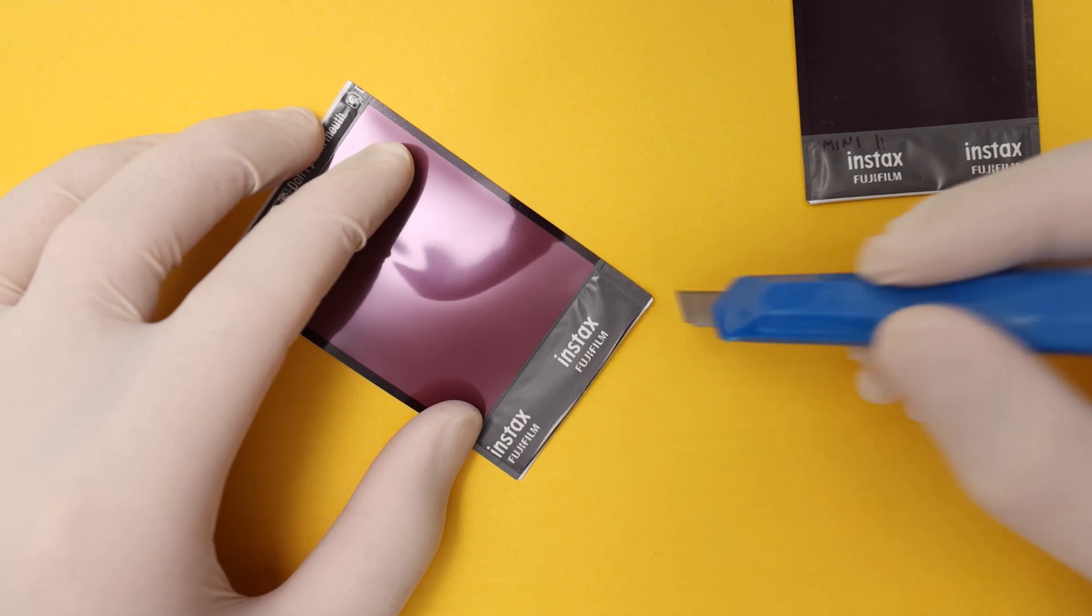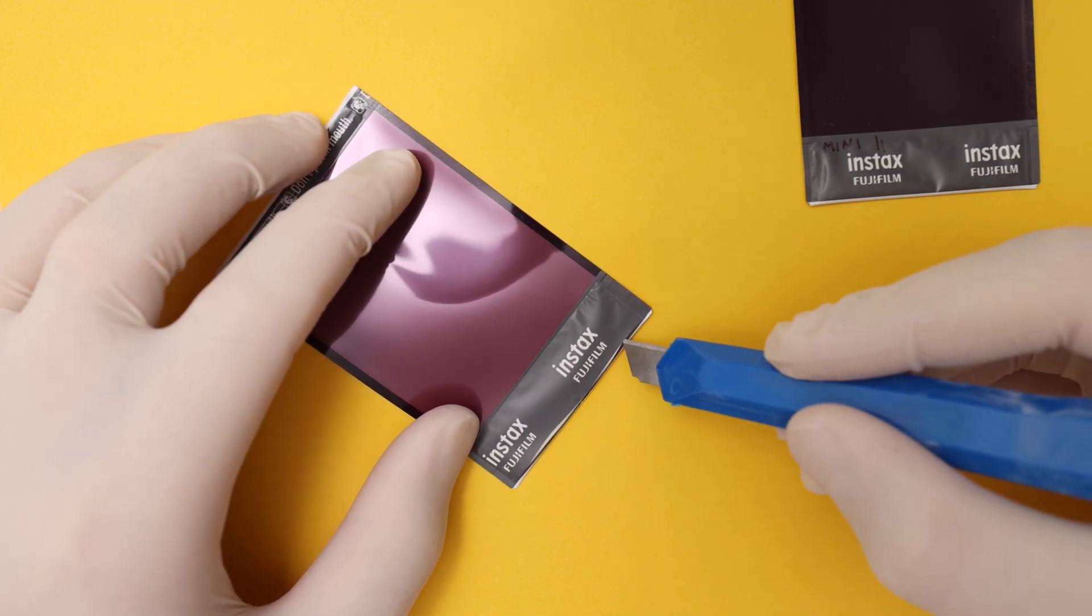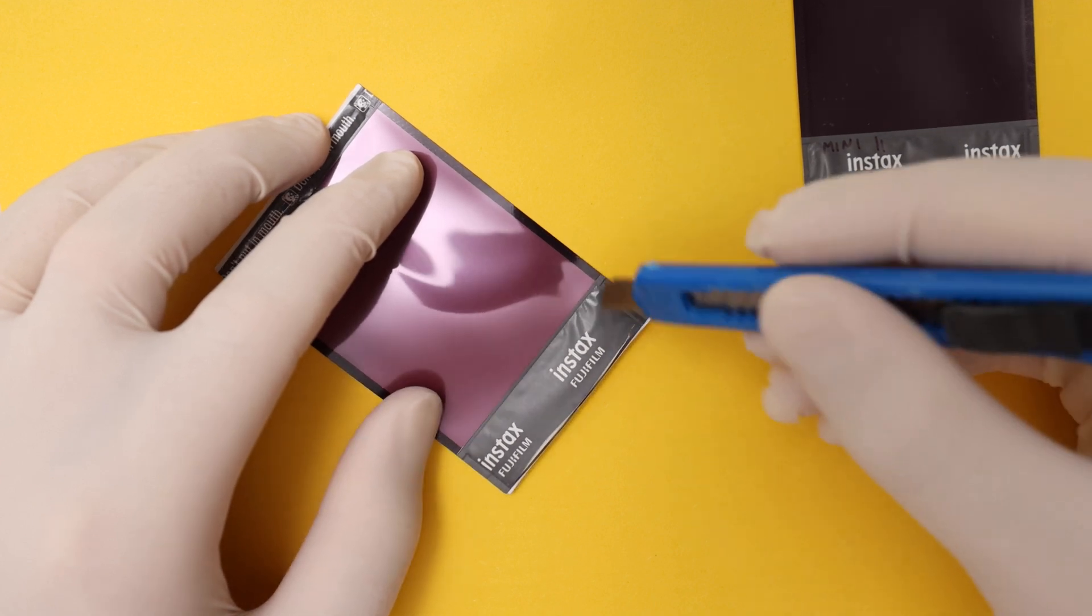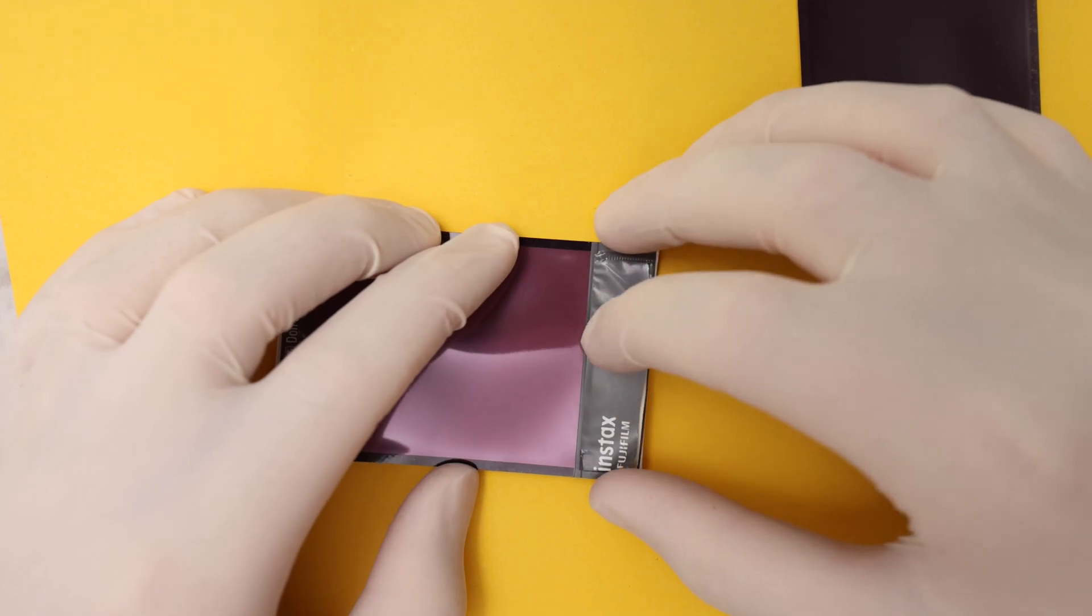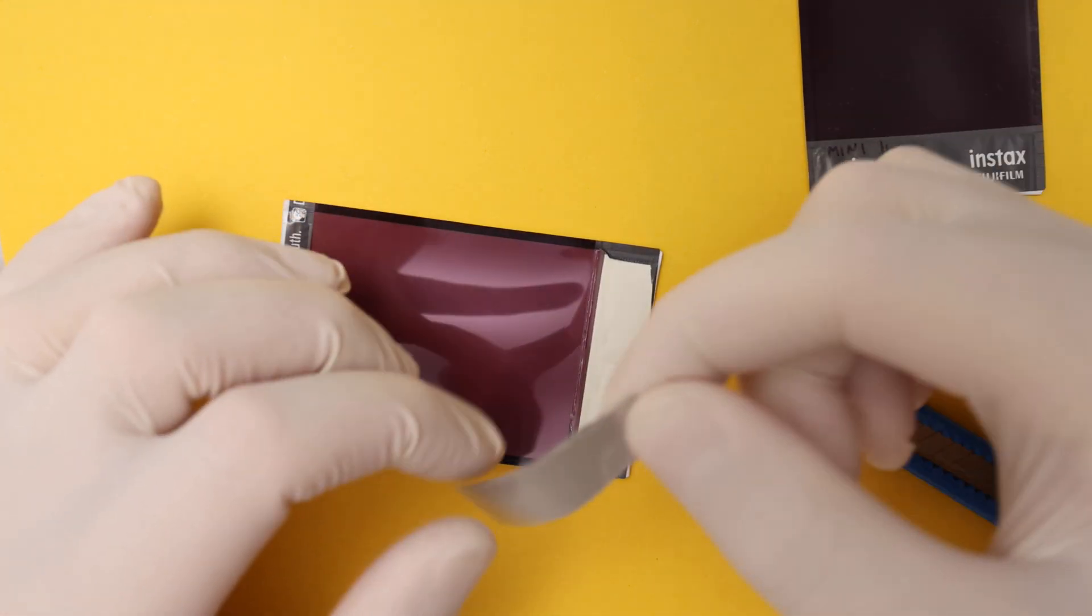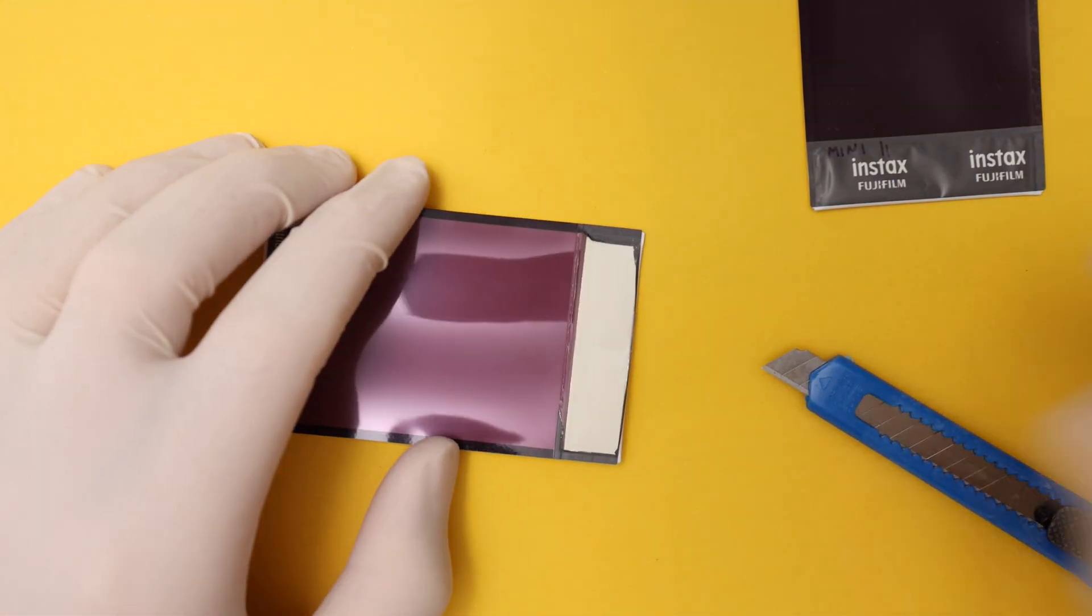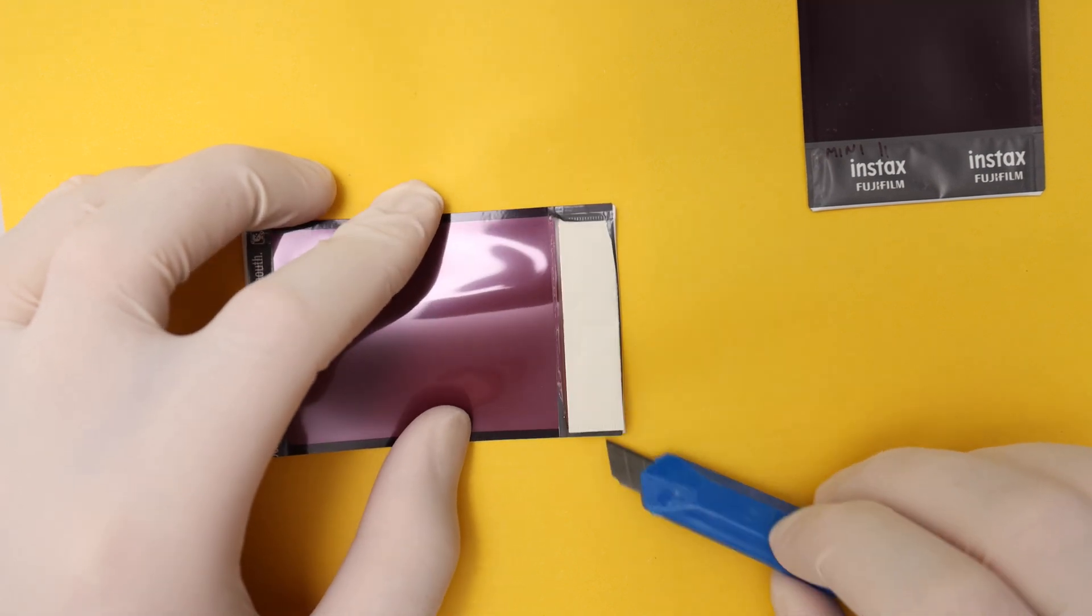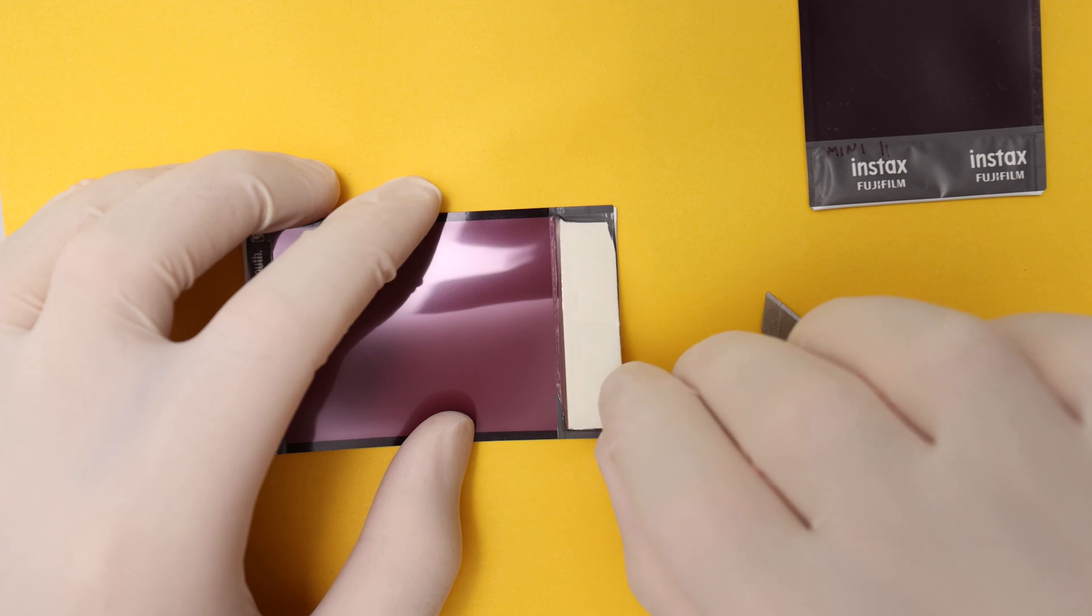It's pretty easy to open up - the layers of plastic are quite thin so it's not hard to cut into it at all. So here we just have a layer that says the Instax - that's nothing, there's just a foil, it's just covering it up. Then we have this kind of paper layer, so that's the pouch.